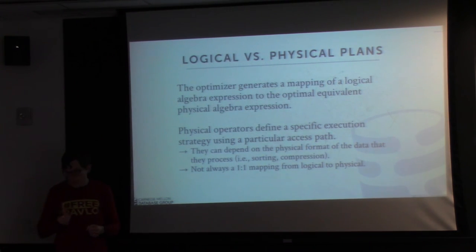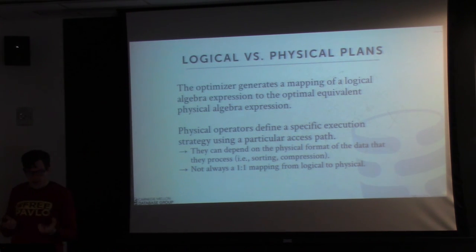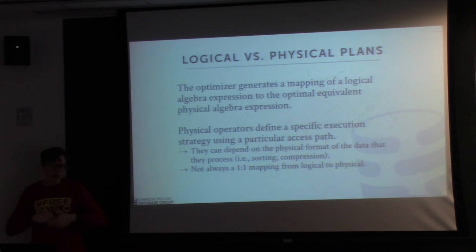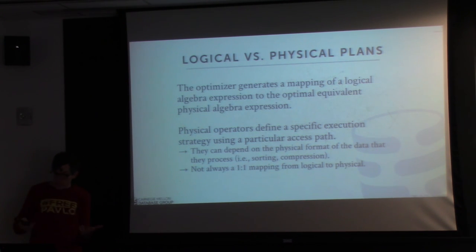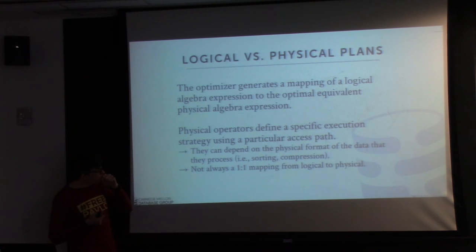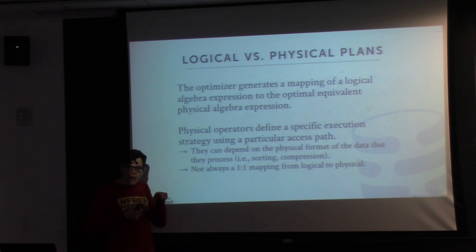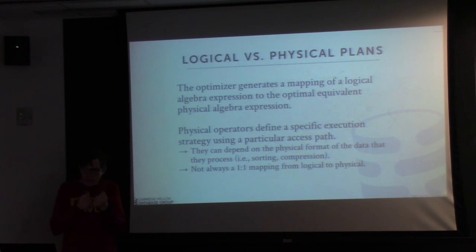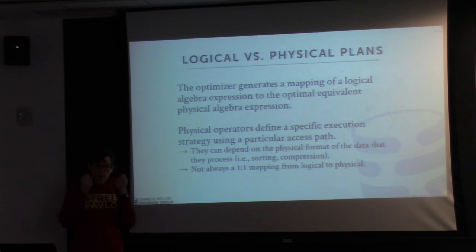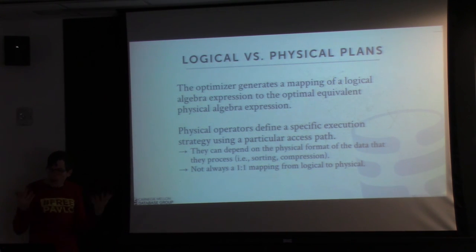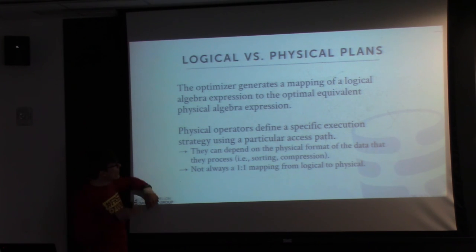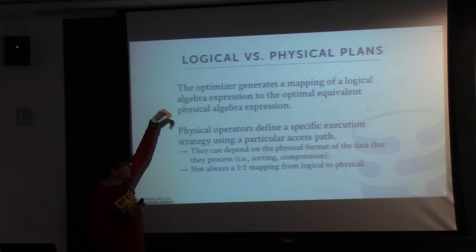The big thing to understand about what happens in the query optimizer is that we're converting a logical plan into a physical plan. The annotated AST is the logical plan — it says at a high level what the query actually wants to do: 'I want to read from table foo,' 'I want to join table A with table B.' It doesn't say how you should actually execute that. The physical operators specify the exact strategy or algorithm — a physical plan would say 'join table A with B using a hash join on this key, with this size hash table and this number of threads.'